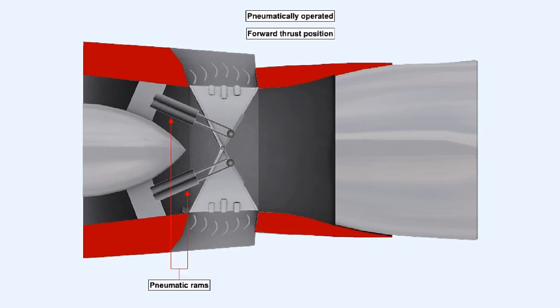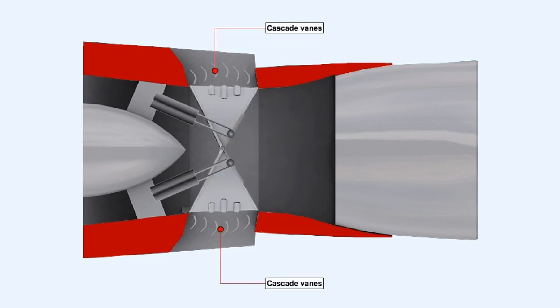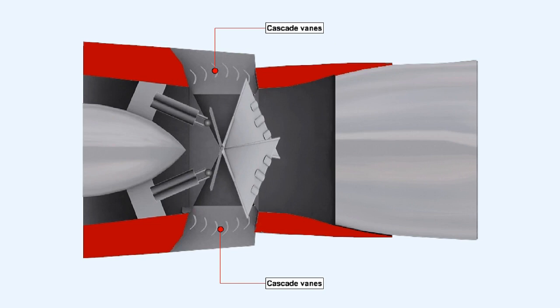Pneumatic rams move the reverser doors from their stowed forward thrust position to their deployed reverse thrust position. In their stowed position, the clamshell doors cover cascade vanes which are revealed when the doors move to the deployed state.